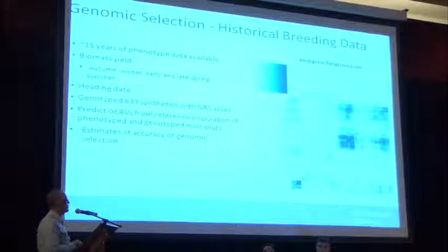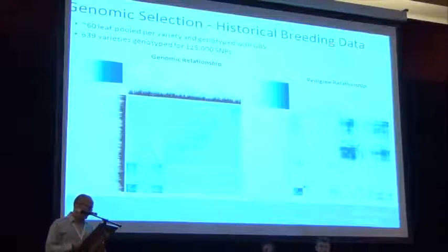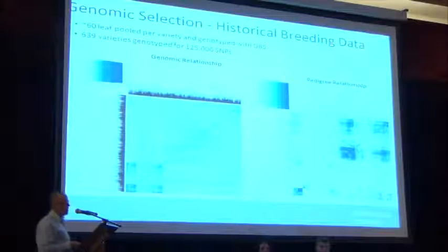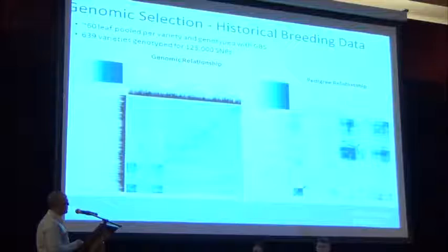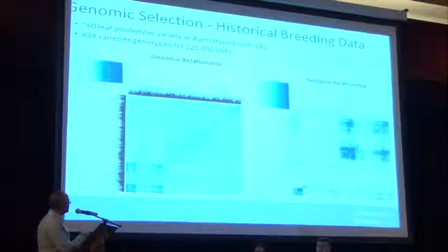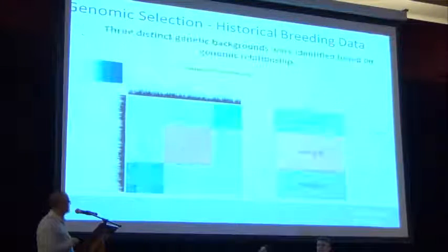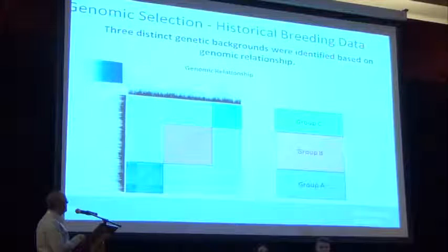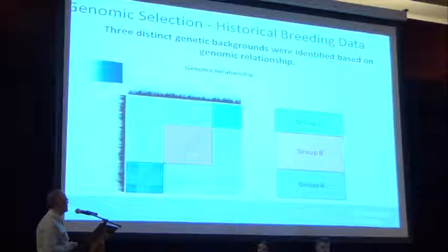Looking at the pedigree relationship matrix, some lines are quite heavily related while others have less pedigree information. When we examine the genomic relationship matrix, we fill in those blanks with a much more comprehensive view of relationships. There's a set that's reasonably well related to itself but not so well related to another section. We identified two different subpopulations, naming them groups A, B, and C — group A is distinct, while B and C are similar and moderately related to each other.